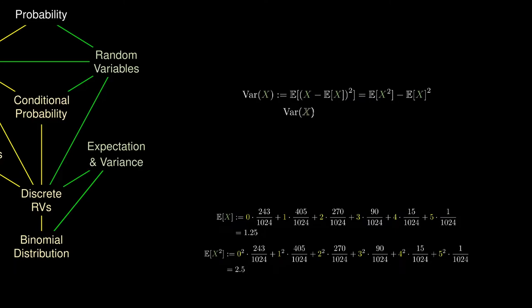So to find the variance, we will plug in the average of the squared values, subtracted by the square of the average value. This calculates to 0.9375.